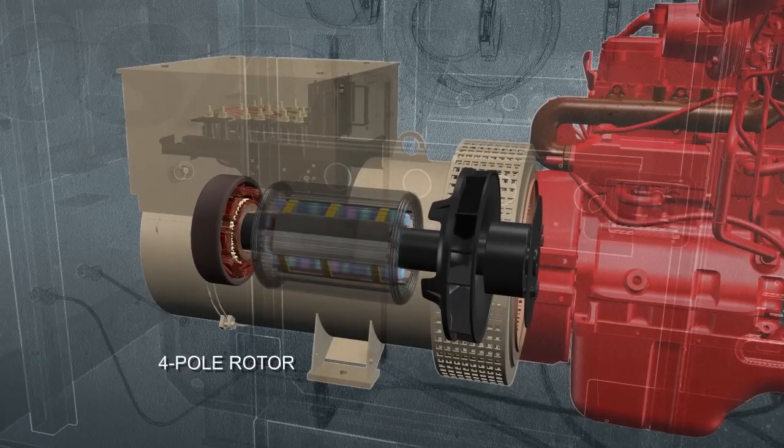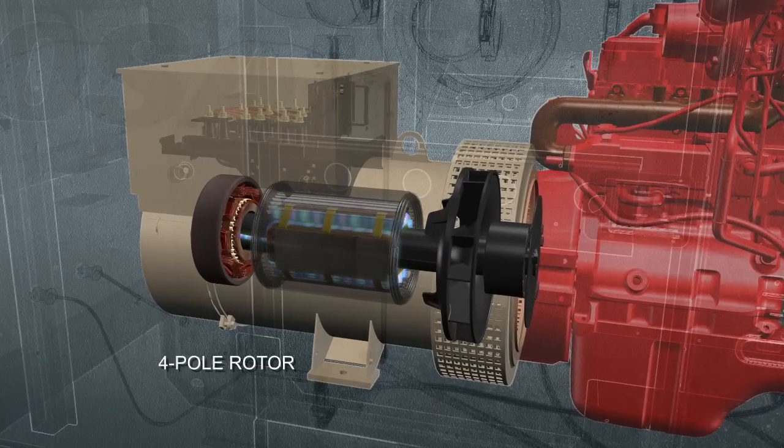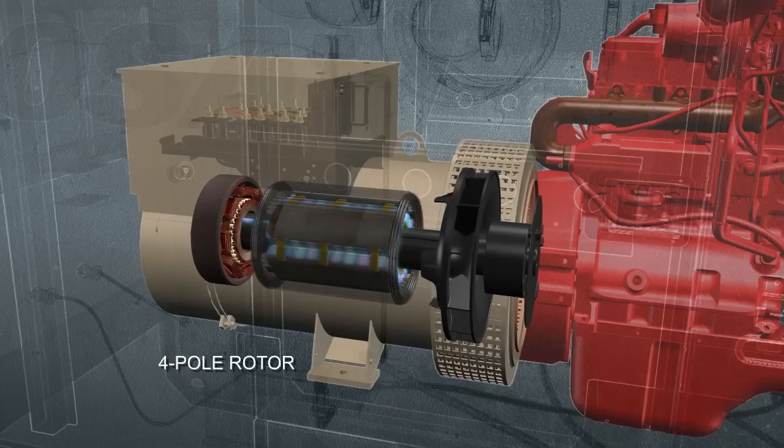When voltage passes through the rotor coils, it creates an electromagnetic field. As the rotor spins, its magnetic field cuts across the stator's conductive wire and generates voltage.